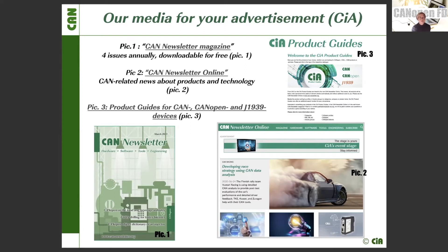In picture two you can see the CAN newsletter online — an online journal which focuses on CAN-related news about products, technologies, developments, and events. In this publication you can also place your advertisement in the form of banners, and we offer different types of banners you can choose from.